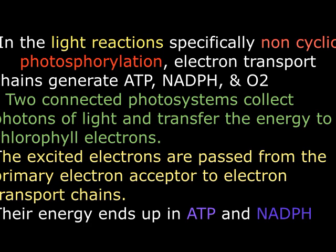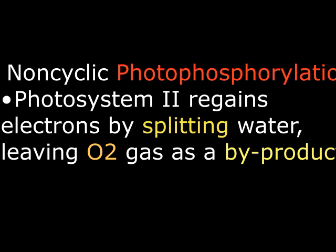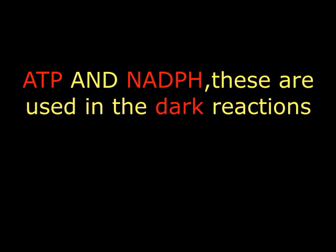Non-cyclic photophosphorylation is also occurring in the chloroplast. It is driven mainly by electron acceptors, photosystems, and the electron transport system. The major components are the photosystems, electron acceptors, and the electron transporting system. The overall products we are going to yield from non-cyclic photophosphorylation — the main ones needed in the dark reaction — are ATP as well as reduced NADP.